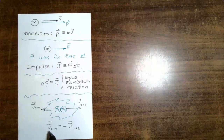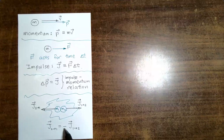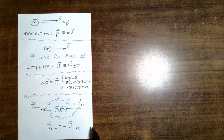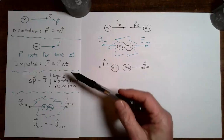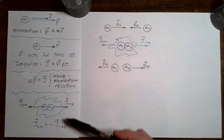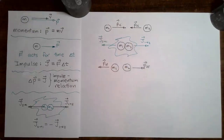and in opposite directions. Mathematically, we can say that the impulse vector that two gives to one is minus the impulse vector that one gives to two. Now we're going to take all of this and put it together to get to the punchline, which we have been building up to for the entire module.